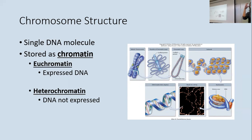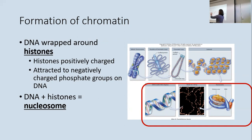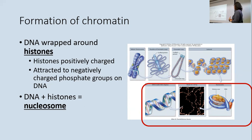DNA gets spooled up by wrapping around proteins called histones. The histones have a positive charge and the DNA has a negative charge due to its phosphate groups, so DNA sticks to the histones as it wraps around them. The unit of DNA wrapped around histones is called a nucleosome.